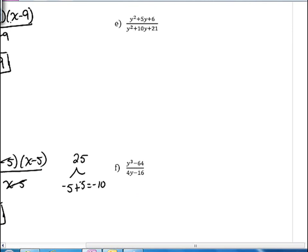In this next example, y squared plus 5y plus 6 over y squared plus 10y plus 21, so we want to factor both the numerator and the denominator. For the numerator, we want to factor 6 so that the sum of the two factors gives us 5. The way that we can factor 6 so the sum will give us 5 is 2 and 3, and so the numerator is going to factor as y plus 2 times y plus 3.